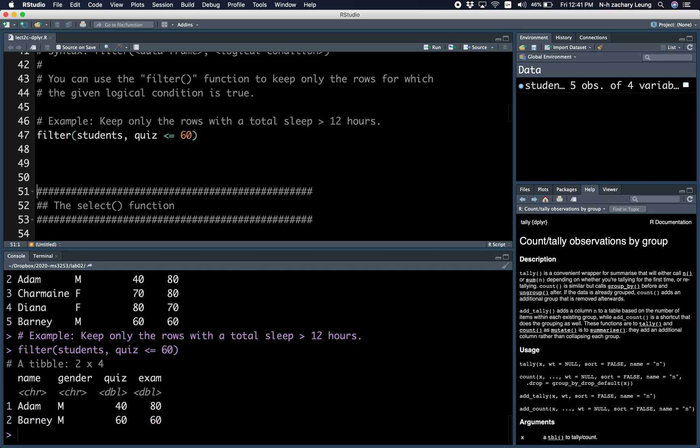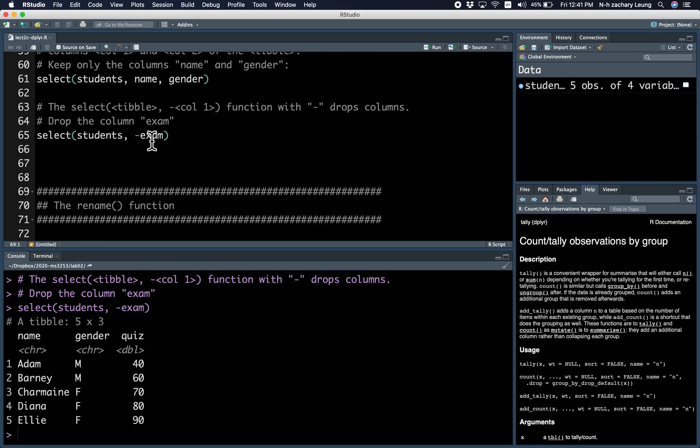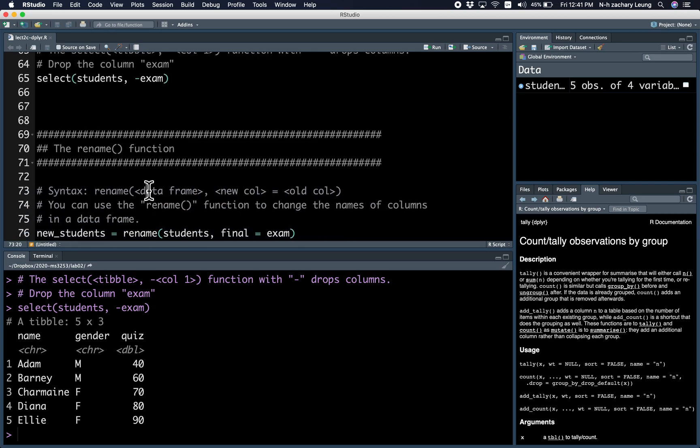If you only want to keep some of the rows, this is how you do it using the filter function. If you only want to keep some of the columns, this is how you use it. Select only the name and gender column, or delete the exam column and keep everything else. If you want to change the name of a column, this is how you do it.